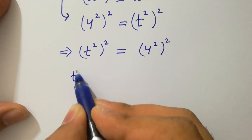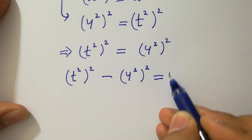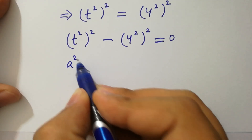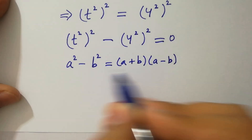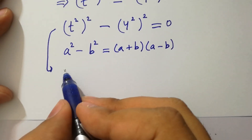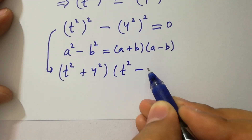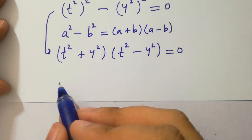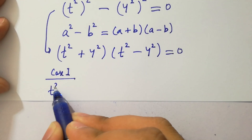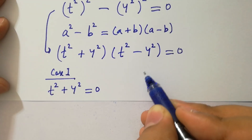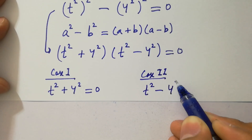This can be written as t squared to the whole power 2 minus 4 squared to the whole power 2 equals 0. Using the formula a squared minus b squared equals (a plus b)(a minus b), we get two cases: first, t squared plus 4 squared equals 0, and second, t squared minus 4 squared equals 0.